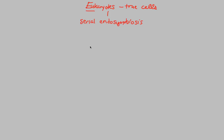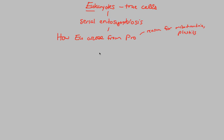A good way to understand eukaryotes is by understanding a process called serial endosymbiosis. Serial endosymbiosis basically tells us how eukaryotes originated — this is all about the origin of life once again. We can write this down as how eukaryotes arose from prokaryotes. This is the reason we have things like mitochondria within our cells, and things like plastids within plants.